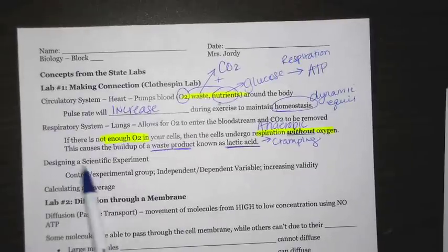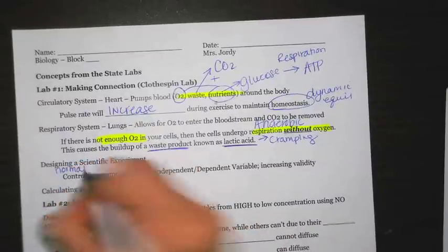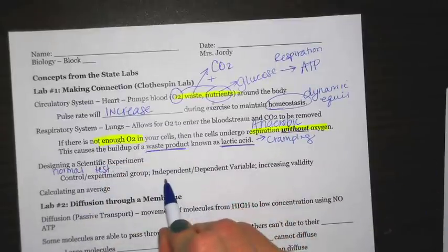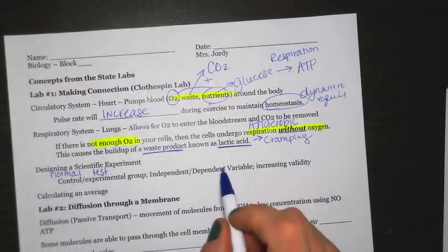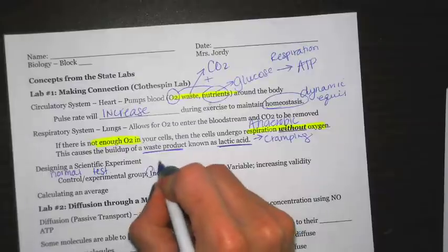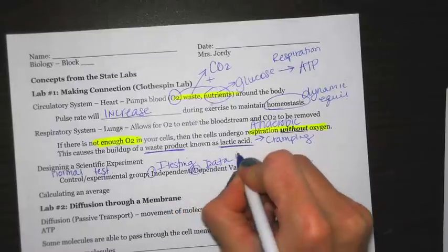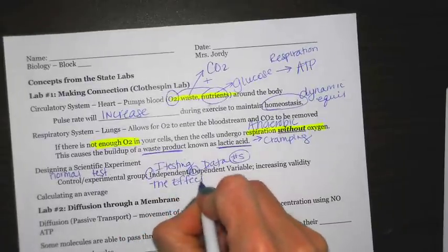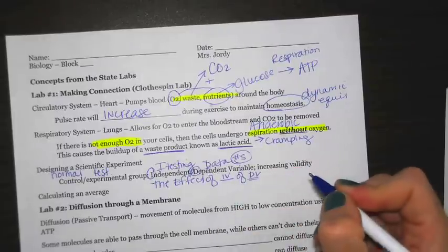Next up, in this lab we have designing a scientific experiment. You have to remember the difference between the control group and the experimental group. The control is the one receiving the normal treatment, while the experimental group is the one getting what you're testing. They'll also ask you for the difference between independent and dependent variables. The independent variable is the thing that you are testing — the difference between the two groups. The dependent variable is the data that you're collecting, typically numbers. When written as a statement, the first part is the independent variable and the second part is the dependent variable.